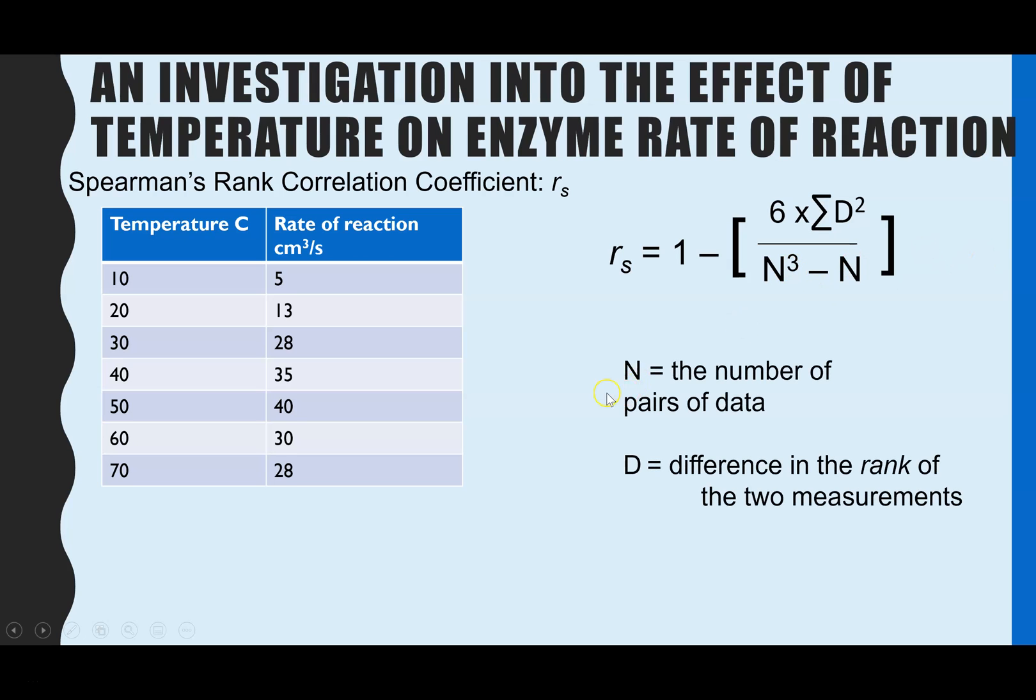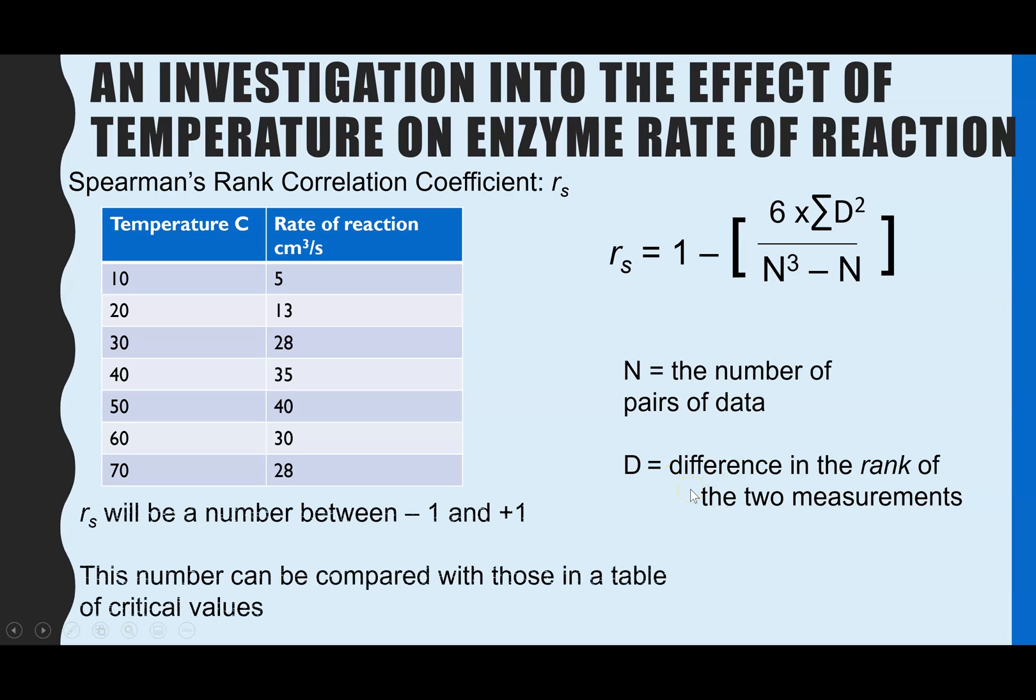So a capital N is the number of pairs of data. So we have got one, two, three, four, five, six, seven pairs of data. D is the difference in the rank. Now that is what we need to go through. So we are going to have a look at a complete work through example. Just to let you know you're now I'm using Spearman's rank for the correlation coefficient and RS is short for Spearman's rank.